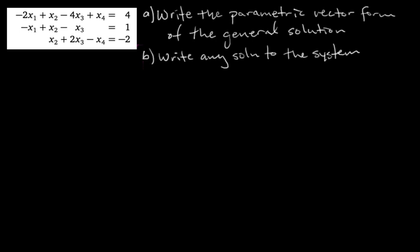But now we want to write the solution in parametric vector form. And then part B of this problem is that we want to write any solution to the system. And spoiler alert, there will be infinitely many to choose from. Okay, so what is the first step to writing the solution in parametric vector form?